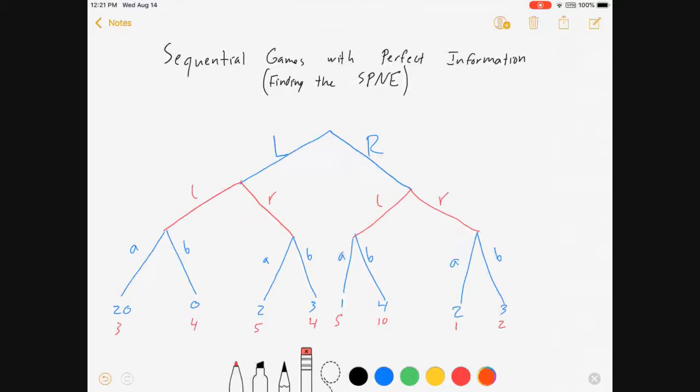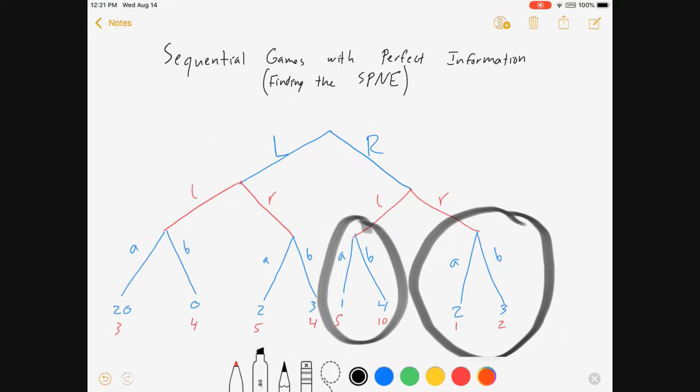First thing I want to do is talk about what the sub-games are. A sub-game is when you look at a certain piece of the game, so like this one. A sub-game is anything that starts with this decision node. So there's a sub-game, here's a different sub-game, here's a different sub-game, here's a different sub-game. And there's four there.